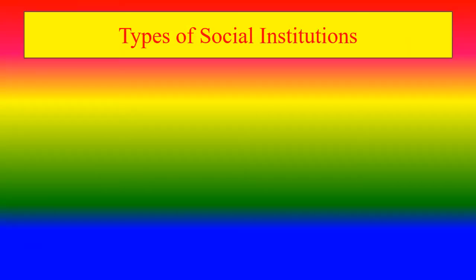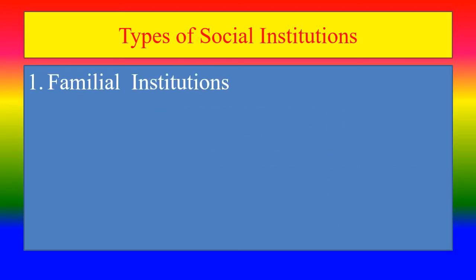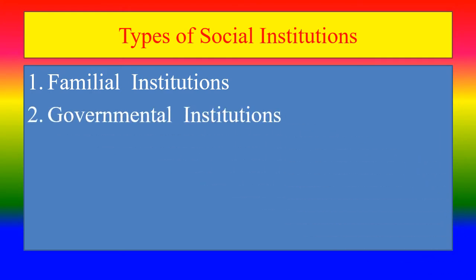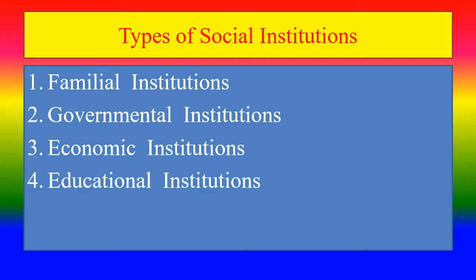What are the types of social institutions? One: familial institutions. Two: governmental institutions. Three: economic institutions. Four: educational institutions. Five: religious institutions.